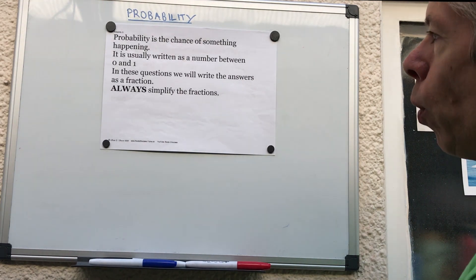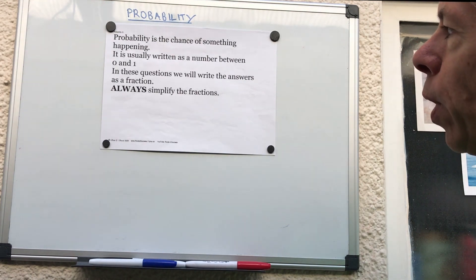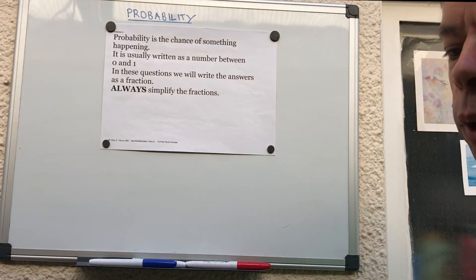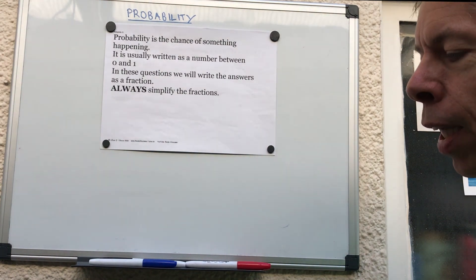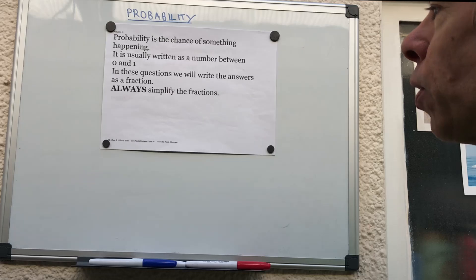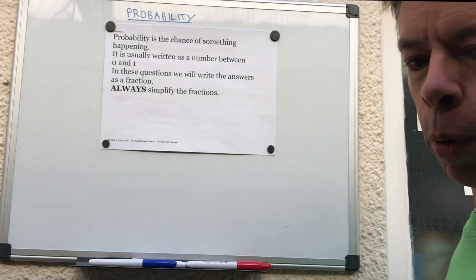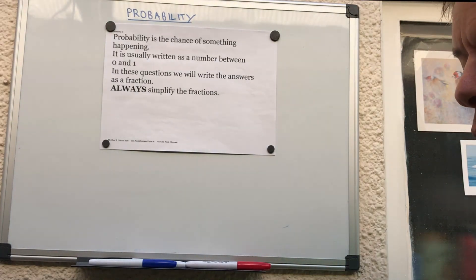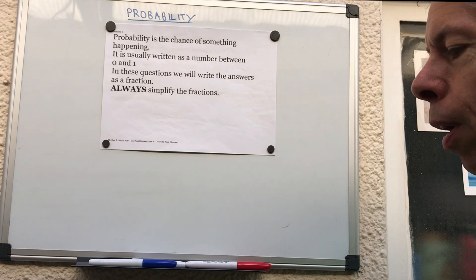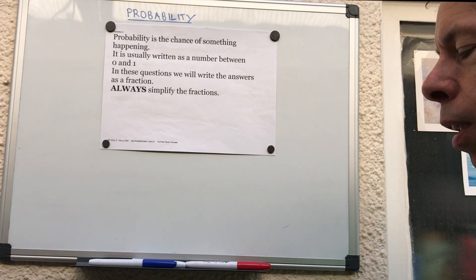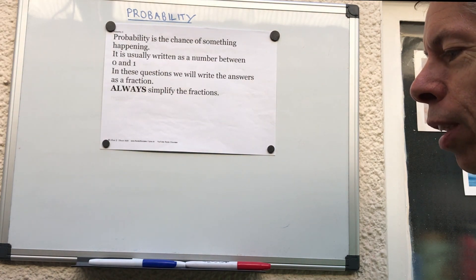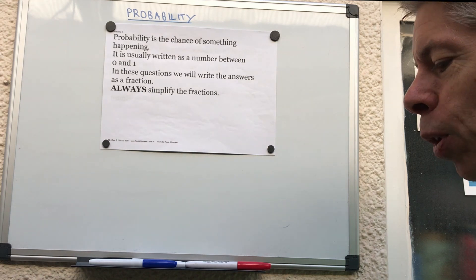In these questions we're going to write the answers as a fraction, and you always simplify the fractions. The probability is basically how many possibilities there are and how many of the thing we're trying to do fits that possibility.